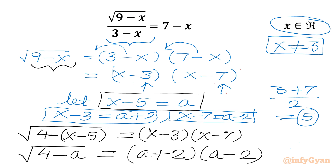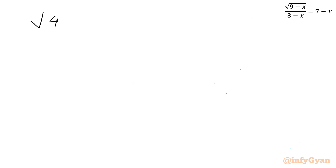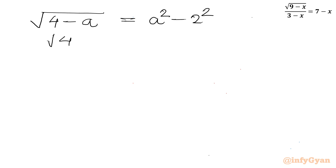The right hand side is a difference of two squares, so square root of (4 minus a) equals a squared minus 2 squared, which equals a squared minus 4.